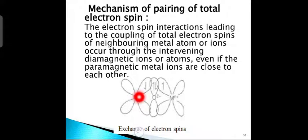In manganese oxide, O²⁻ is the intervening ion, with manganese on one side and the other side also manganese. The electronic configuration of manganese: atomic number 25, electronic configuration 1s², 2s², 2p⁶, 3s², 3p⁶, 3d⁵, 4s². In the 3d orbital, it has 5 electrons.